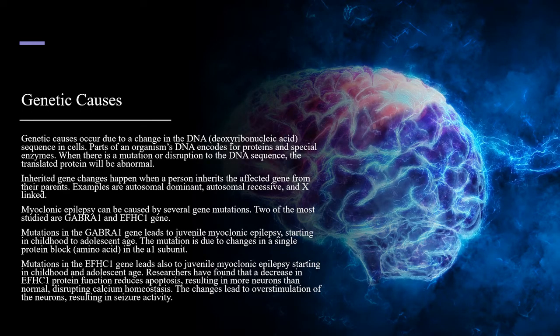Genetic causes occur due to a change in the DNA sequence in cells. Parts of an organism's DNA encodes for proteins and special enzymes. When there is a mutation or disruption to the DNA sequence, the translated protein will be abnormal. Inherited gene changes happen when a person inherits the affected gene from their parents. Examples are autosomal dominant, autosomal recessive, and X-linked.